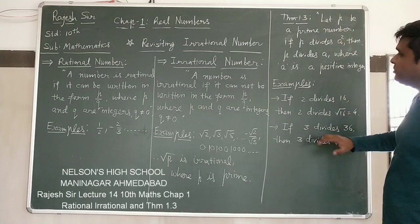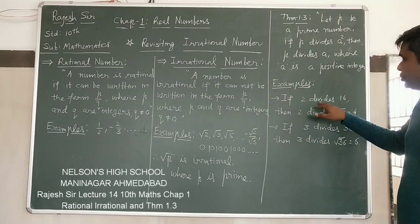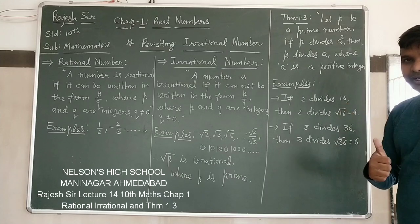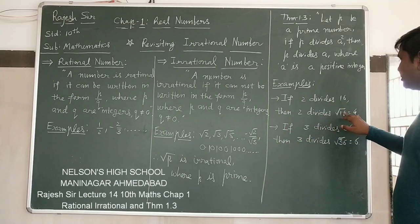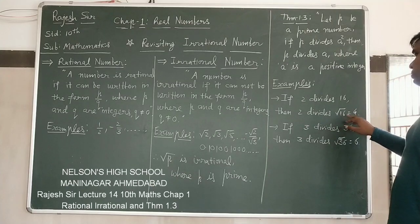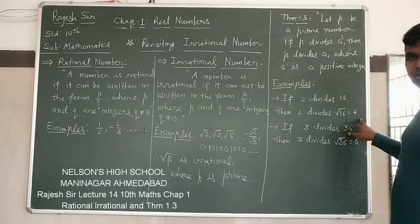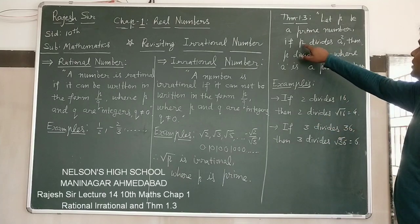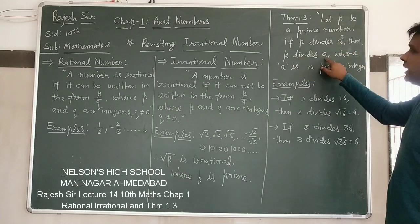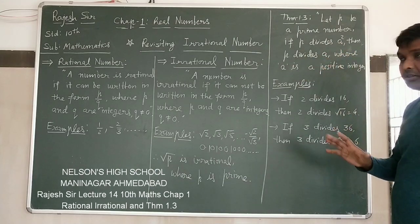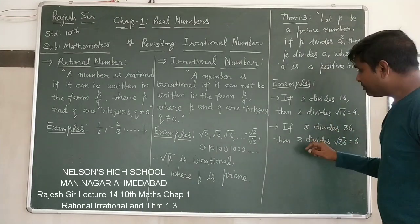To understand this theorem, we have given some examples. Like, first example, 2 divides 16. It is a fact. So, 2 divides root 16 also. Root 16 means 4. So, 2 divides 4 also. Do you understand? If P divides A square, then P will divide A also. It is compulsory by this theorem. And you can understand this is the fact also.